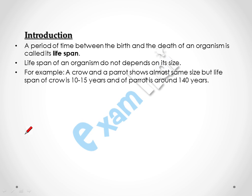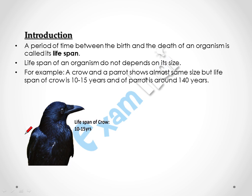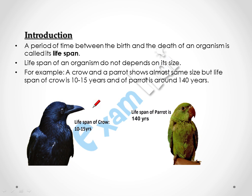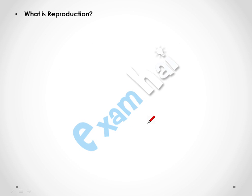The lifespan of an organism does not depend on its size. For example, a crow and a parrot show almost the same size, but the lifespan of a crow is 10 to 15 years, whereas the lifespan of a parrot is 140 years.